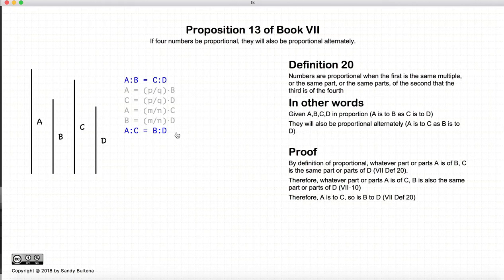And there we have it. If the ratio of A to B is equal to the ratio of C to D, then the ratio of A to C is equal to the ratio of B to D. And that's it for this proof.